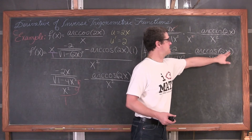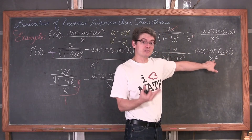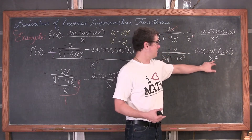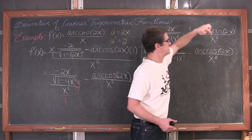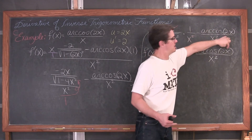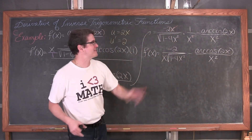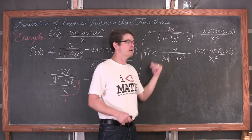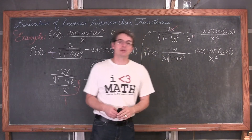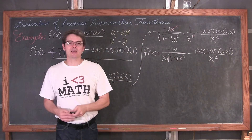Don't be tempted to cancel any x with the x's in the denominator of the second term — the 2x is inside the arc cosine function, so nothing else is going to cancel. And we are done with this example.